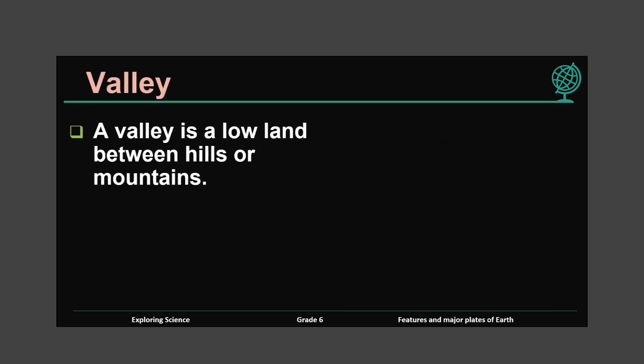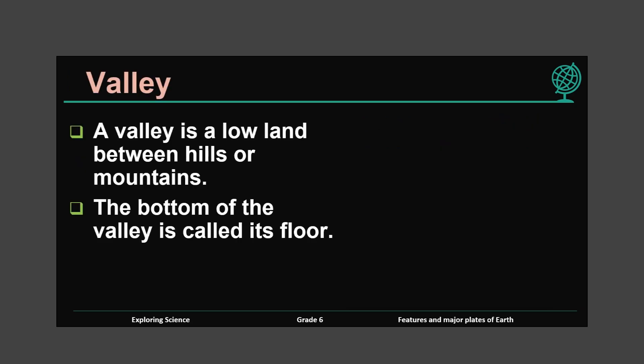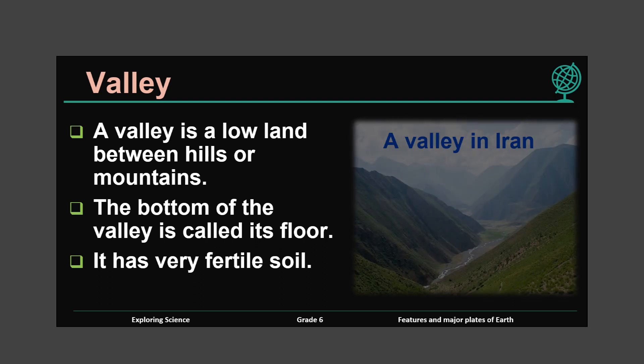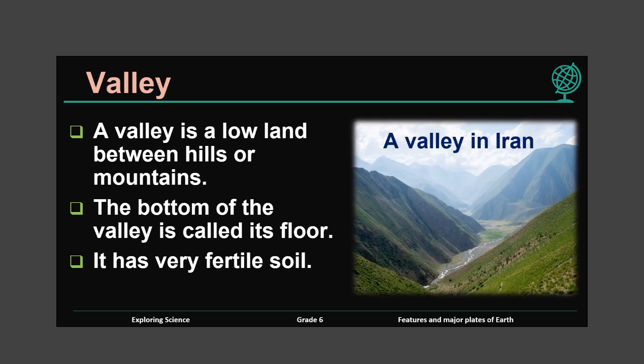Valley. A valley is a low land between hills or mountains. The bottom of the valley is called its floor. It has very fertile soil. This is the valley in Iran. How many of you wish to go there? I wish I could. From these landforms we can see the beauty manifest in Allah's creation.